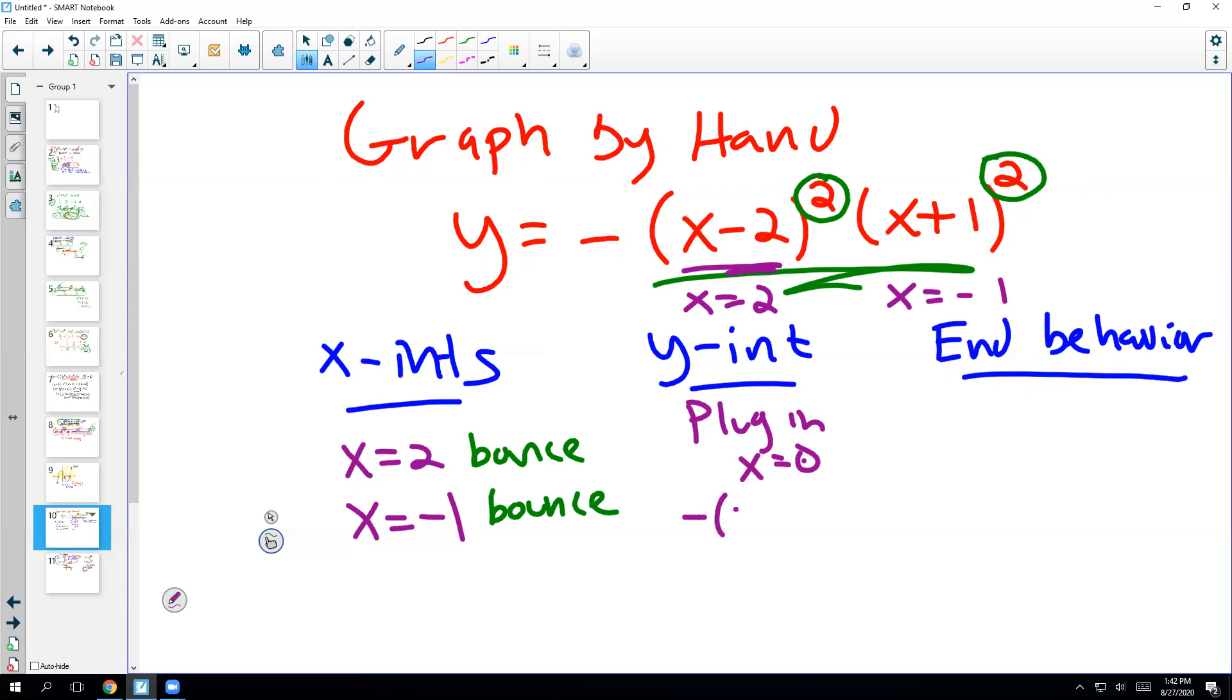So you plug in 0, you're going to get negative (negative 2) squared and (1) squared. And all that's going to be negative. So negative 2 squared is 4 times 1 squared is 1. So it's going to be negative 4. So just plug in 0.